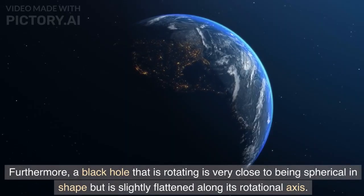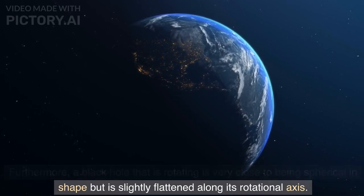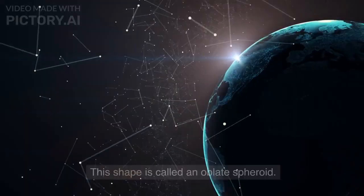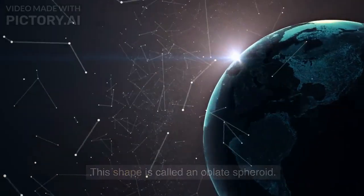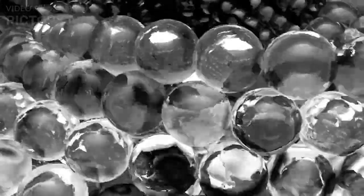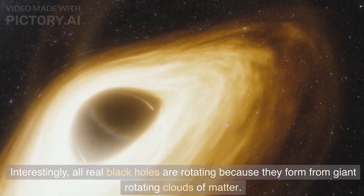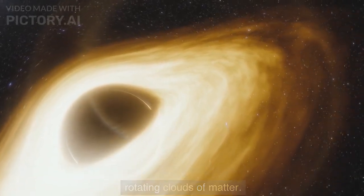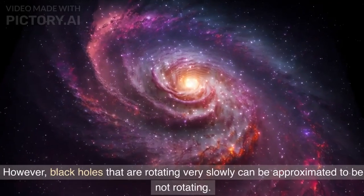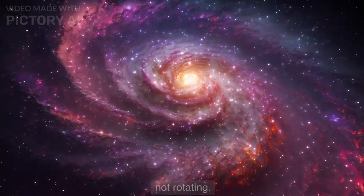Furthermore, a black hole that is rotating is very close to being spherical in shape but is slightly flattened along its rotational axis. This shape is called an oblate spheroid. A rotating black hole also extends linearly through the time dimension. Interestingly, all real black holes are rotating because they form from giant rotating clouds of matter. However, black holes that are rotating very slowly can be approximated to be not rotating.